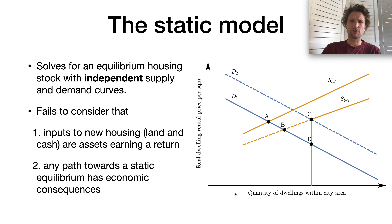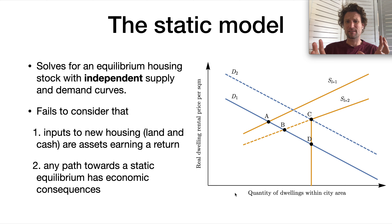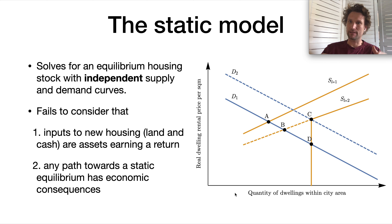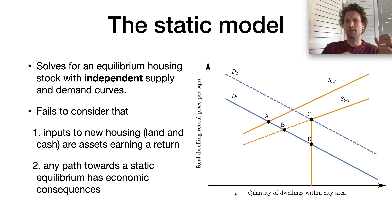Typically, housing academics use a static model of housing supply where the equilibrium is set by independent supply and demand curves. As a graphical representation, you have a stock of dwellings in a city and a price per dwelling that equilibrates. A price level and a stock quantity reach equilibrium because the supply curve is related to rising input costs of development — for instance, when flat easily accessible land is used up, the next housing must be built on sloped, inaccessible land, making driveways, roads, plumbing, and everything slightly more expensive. That's why the supply curve slopes upward with price level.